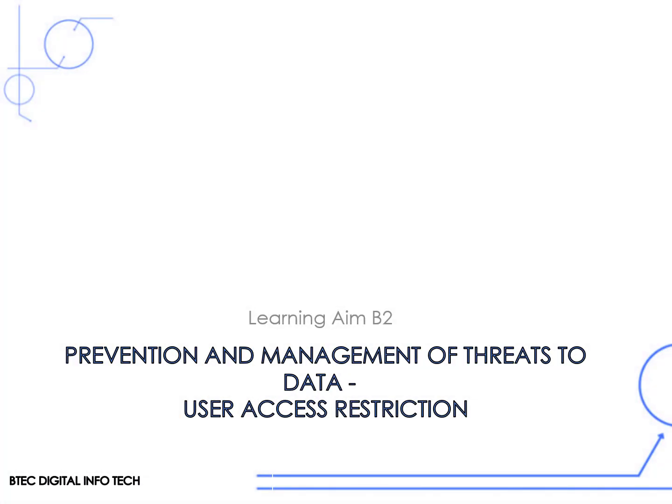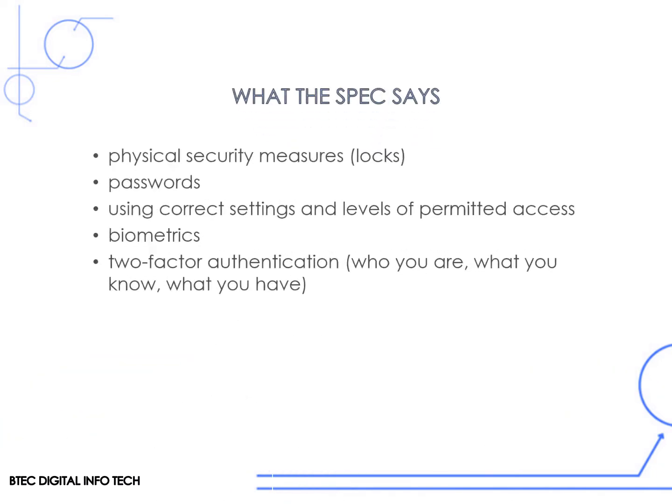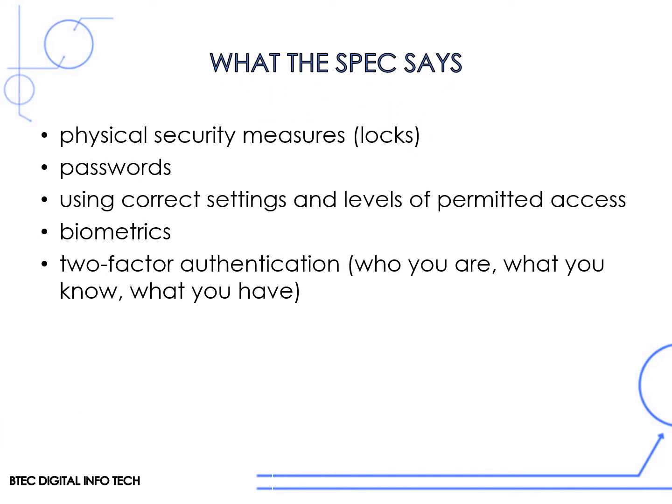This is for Learning Game B2, Prevention and Management of Threats to Data, and this is focusing on User Access Restriction. The specification says we need to focus on physical security measures, passwords, using correct settings and levels of permitted access, biometrics and two-factor authentication.